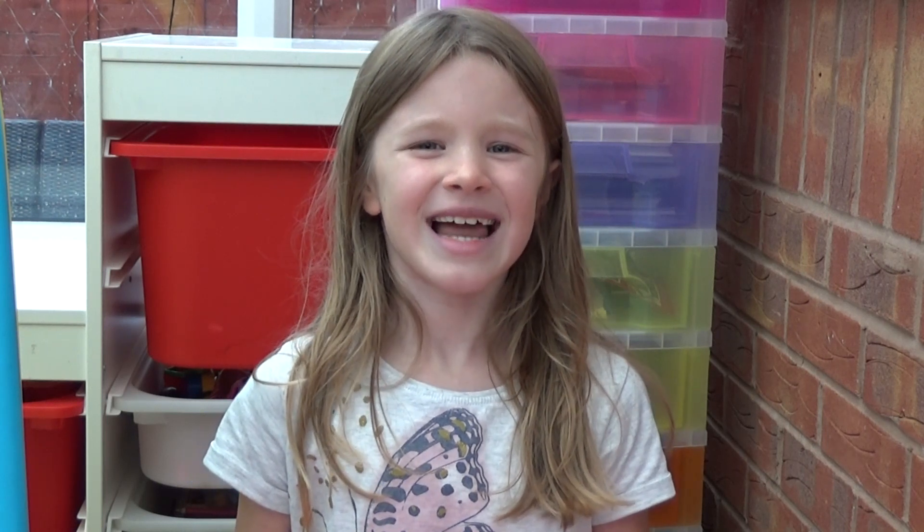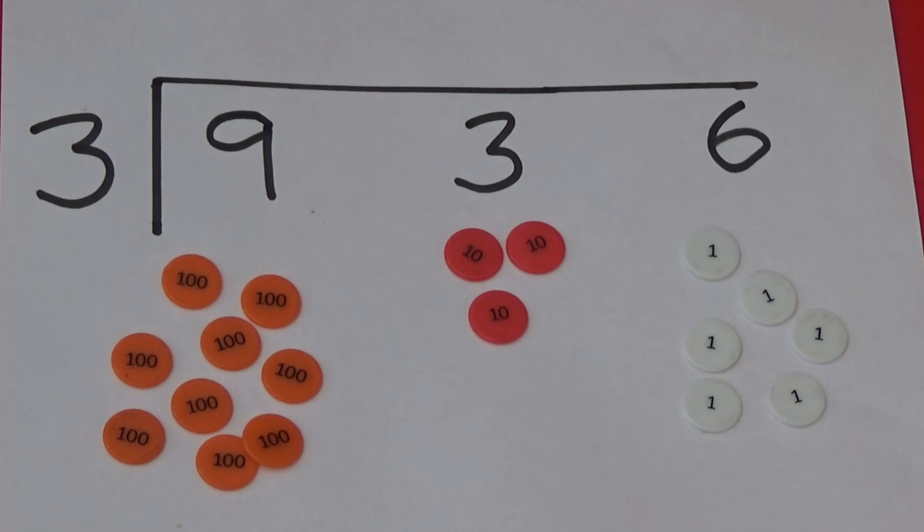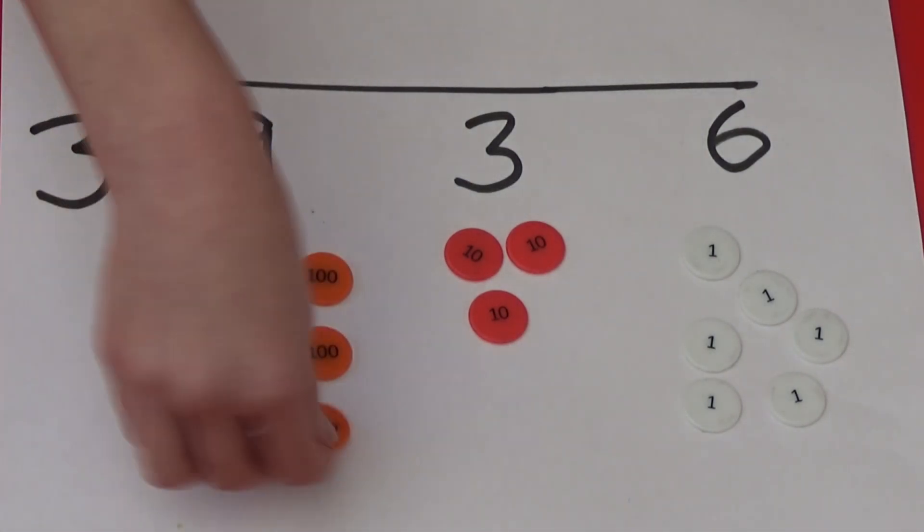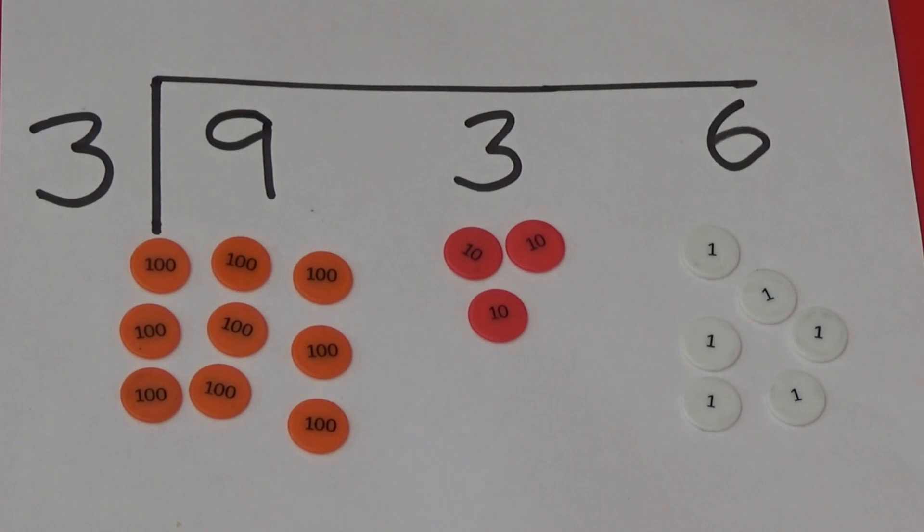As we are dividing by 3 we need to divide the 100s into groups of 3, then the 10s and then the 1s. If we start with our 100s, nine 100 counters make 3 groups of 300 counters. As we have made 3 groups I am going to put 3 above the line.